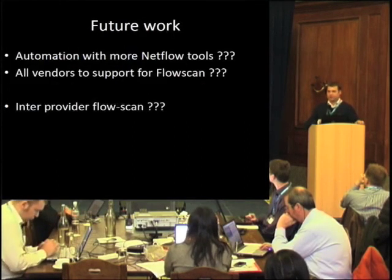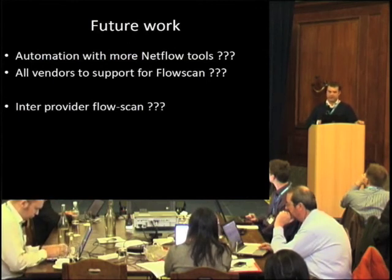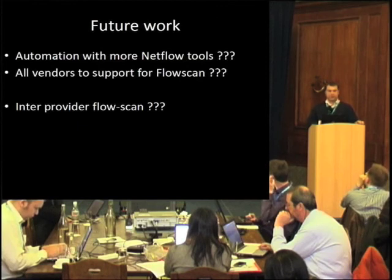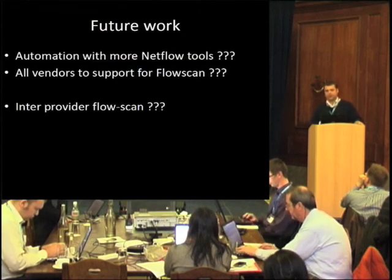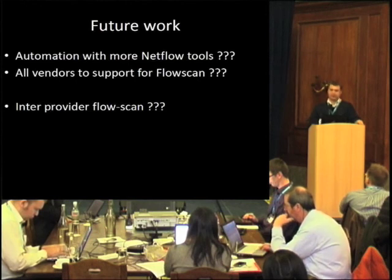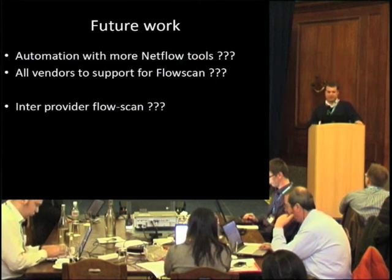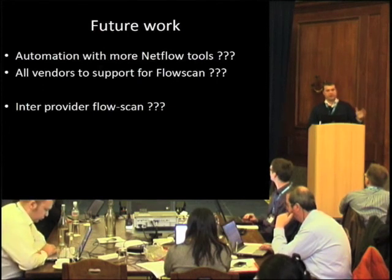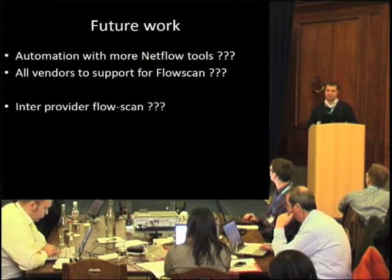The future work for this particular tool: it would be nice if there was more automation with different open source NetFlow tools so that more NetFlow tools could export their data into the ExaBGP software. It would be nice if more router vendors supported FlowSpec as well. And it might be interesting if different providers want to share information with each other so that there can be an inter-provider filter system. That's possibly one for the future. Thank you.